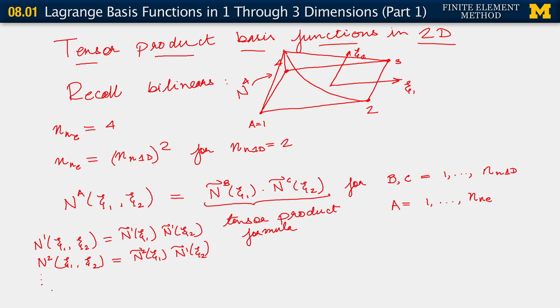This goes on, and we finally write N4. N4 of C1, C2 is, can you work it out? It's N2 tilde, sorry, it's N1 tilde again. N1 tilde of C1, N2 tilde of C2. It's as simple as that.